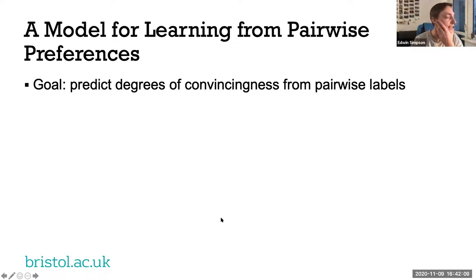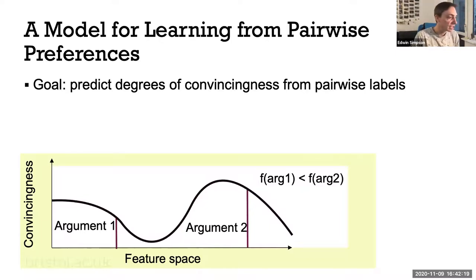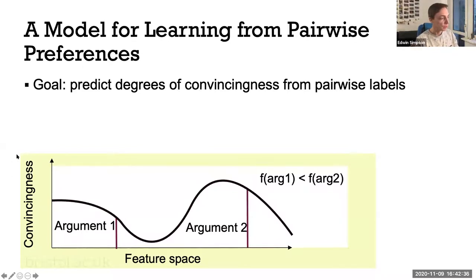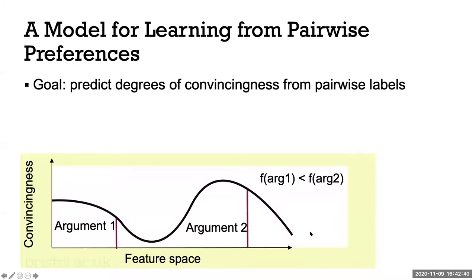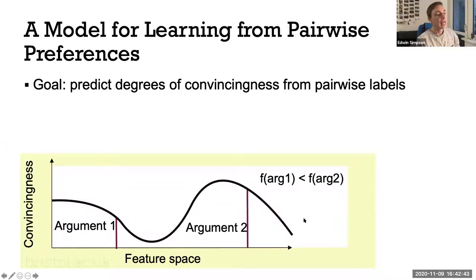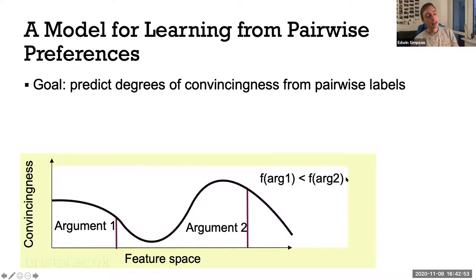The question is what model to use. We need a function that takes features of the arguments and predicts degrees of convincingness from pairwise labels. If you project onto one dimension, you can plot arguments on the x-axis and the convincingness function on the y-axis. If the score f of argument one is less than f of argument two, you get a pairwise label saying argument two is preferred. We face challenges with annotation errors, disagreements, sparse data, and limited budget for crowdsourcing labels.